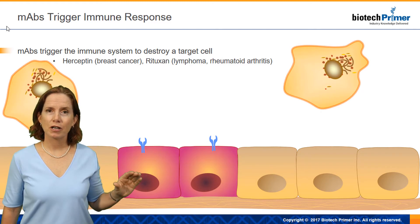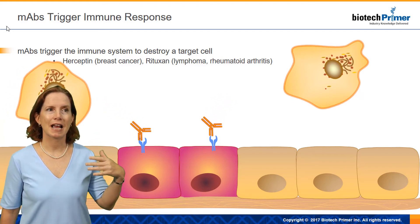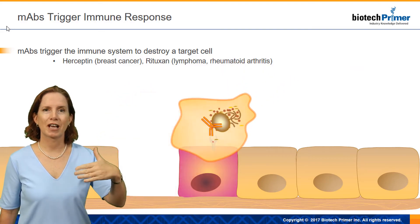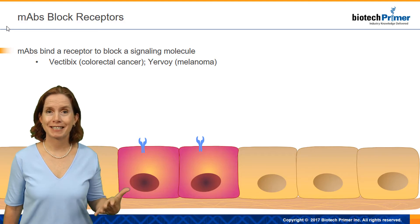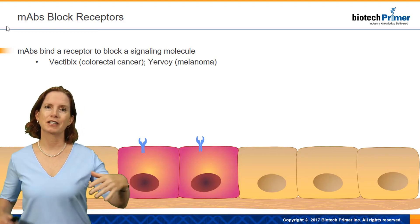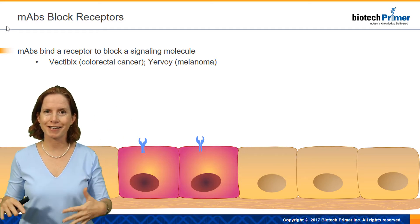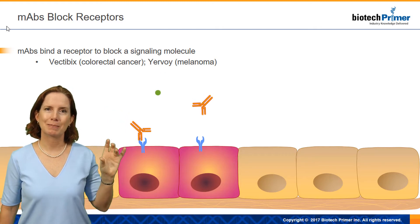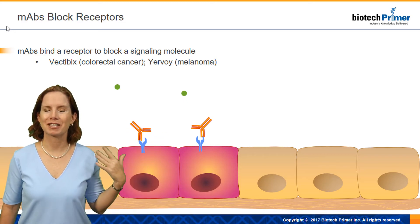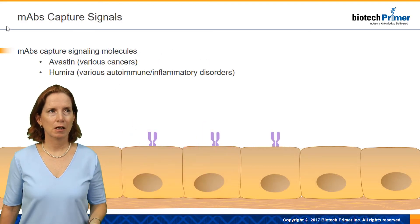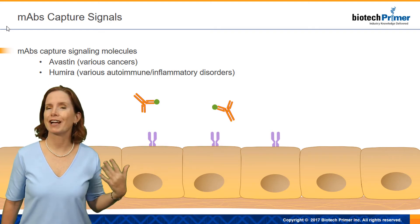So how do they work as therapeutics? They work very similarly to how they work in our own body. For example, an antibody might bind an antigen on the surface of a cancer cell and attract white blood cells to target and destroy that cancer cell. They might also block a signaling molecule — for example, a growth signal tells cells to divide, and if we have overactive growth signaling or too much of a growth signal, that can lead to cancer. So we might design an antibody that specifically recognizes and binds to a growth factor receptor on the surface of cancer cells and blocks that signaling from telling the cancer cell to divide.